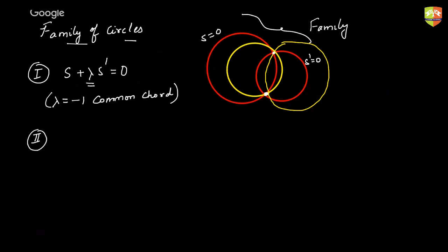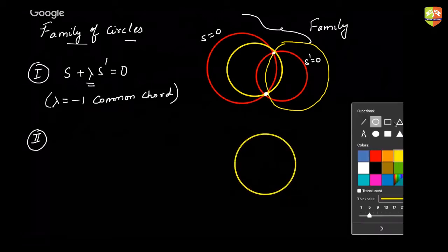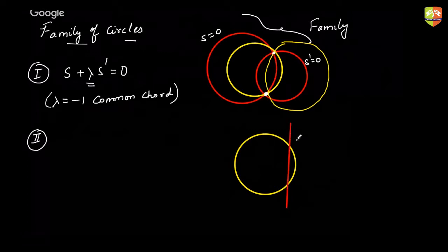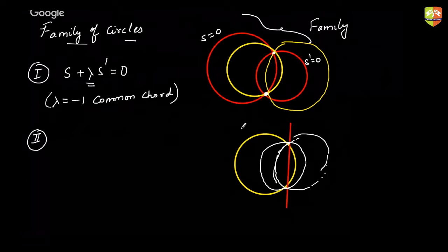The second case is a situation where you have a circle and a line which intersects the circle. From the points of intersection of this circle and line, you can pass infinitely many circles, all constituting a family. If the equation of the circle is S equal to 0 and the equation of the line is L equal to 0, then the equation of the general family member is S plus lambda L equal to 0. An additional condition will be provided to find lambda.